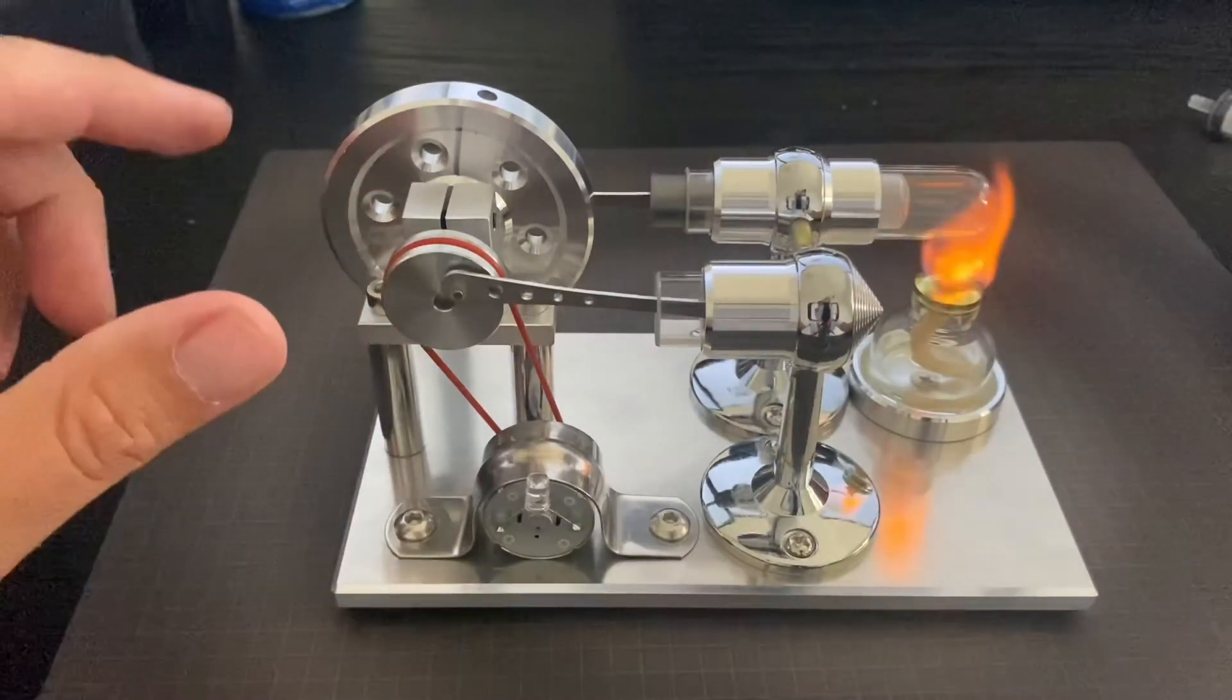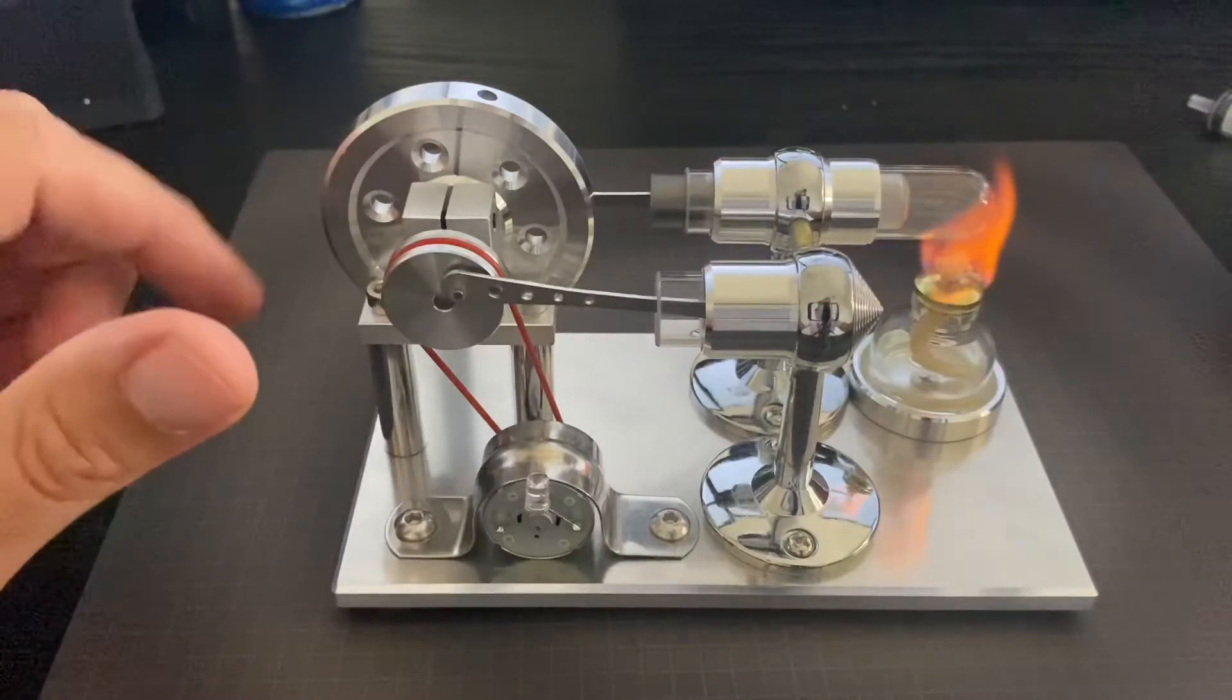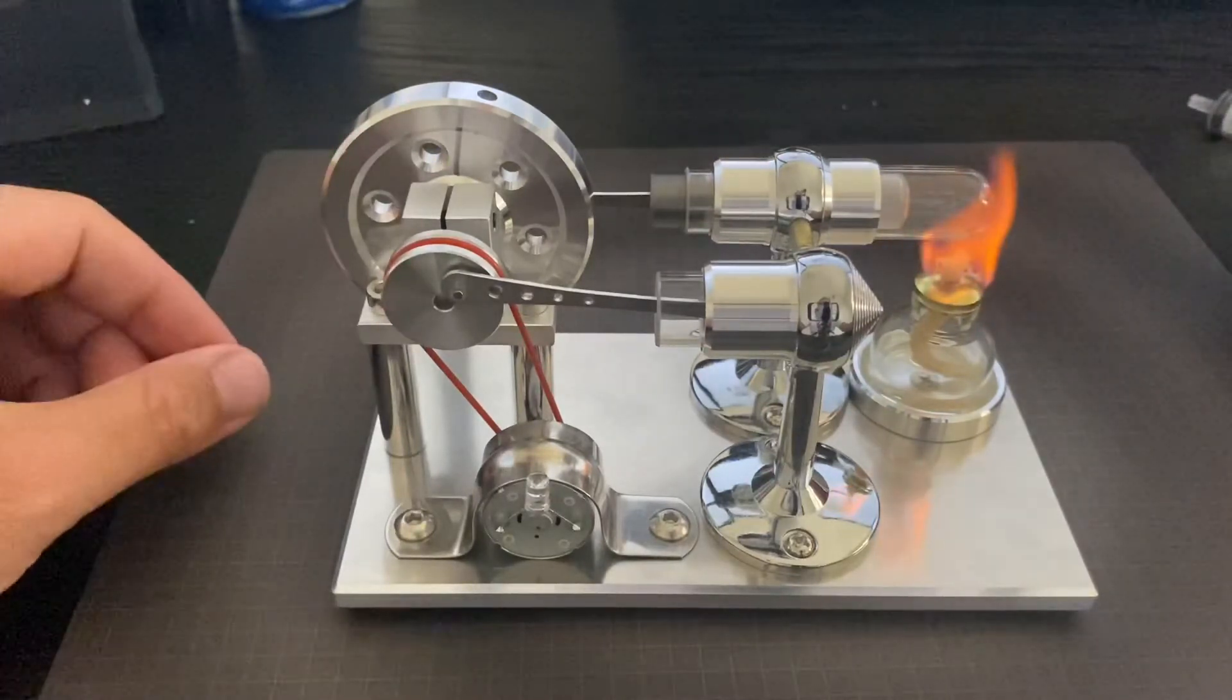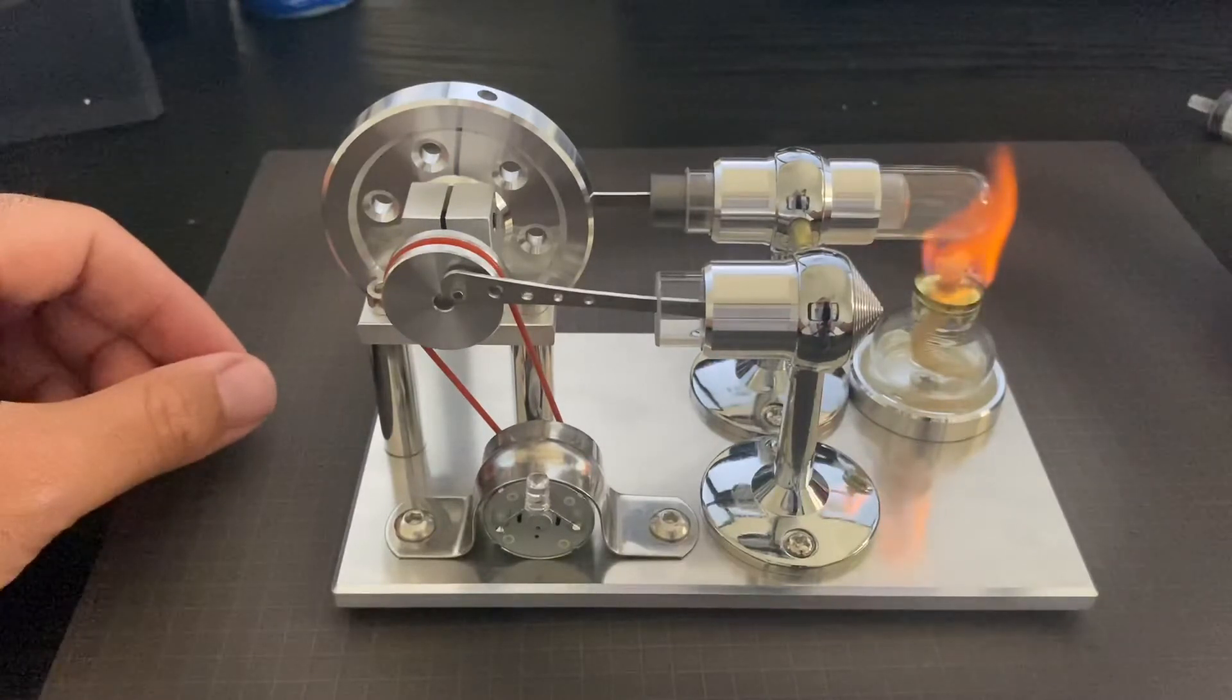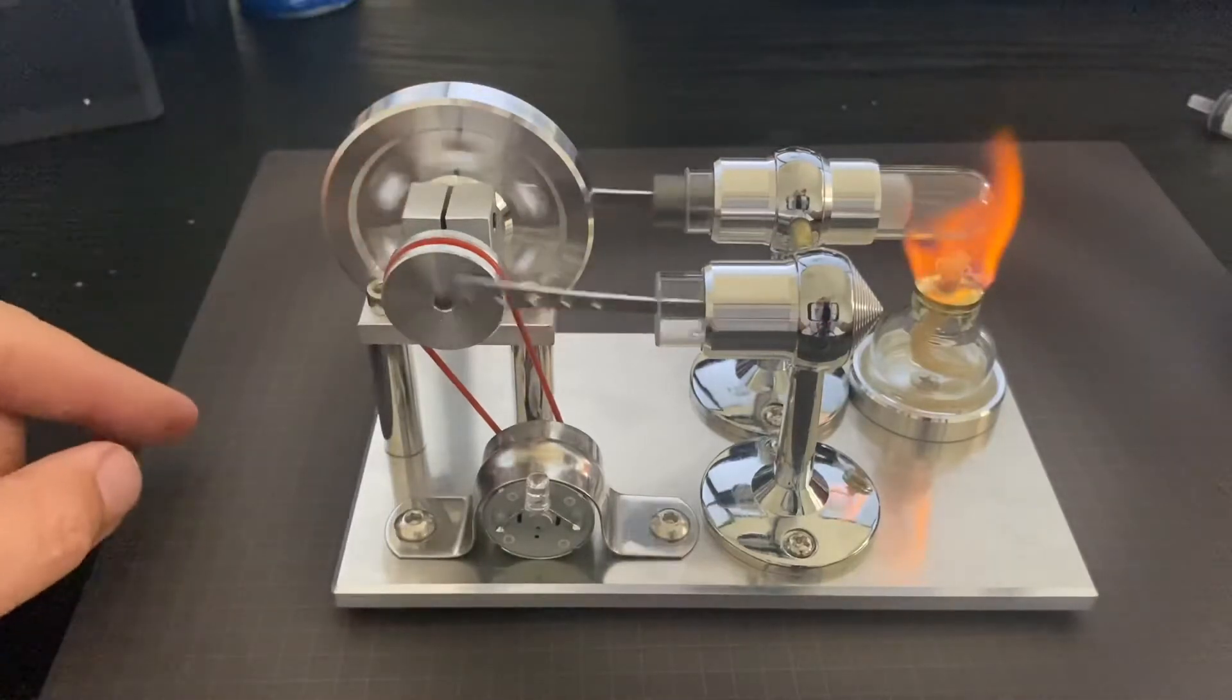You just light up the wick, give it about five or six seconds, and then you're gonna go ahead and flick the motor here. You're essentially the starter motor. So we're gonna let it warm up a little bit because it takes a few seconds for it to build up enough heat to go. There it goes!